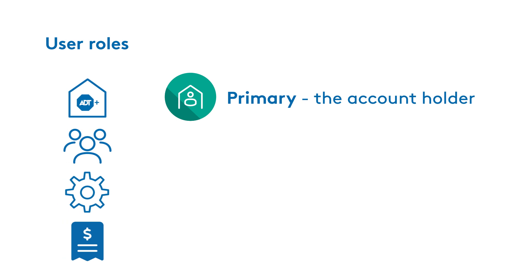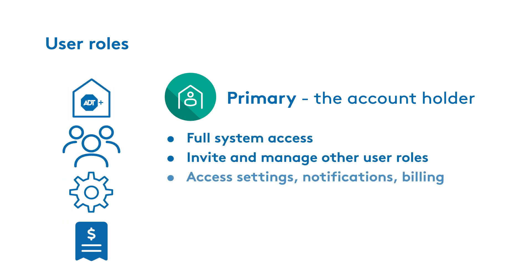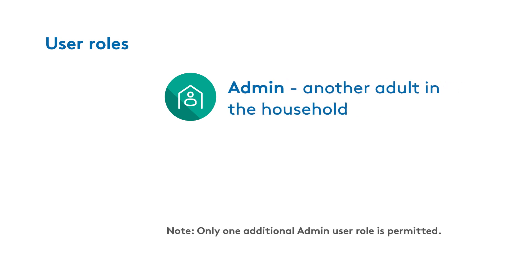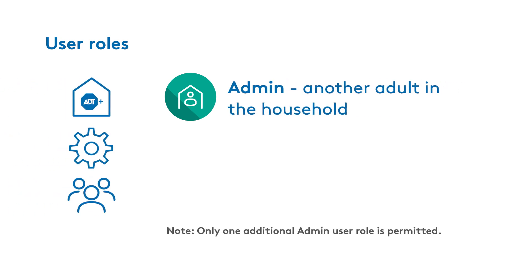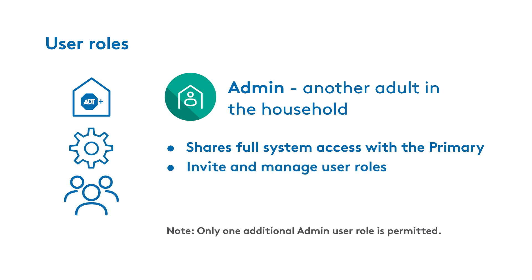The primary user is the main account holder, who has full access and control of the system. They can add and remove additional users and manage settings, billing, and more. Next is the admin user, typically another adult in the household who shares full access with the primary, including managing the security system and inviting other users.